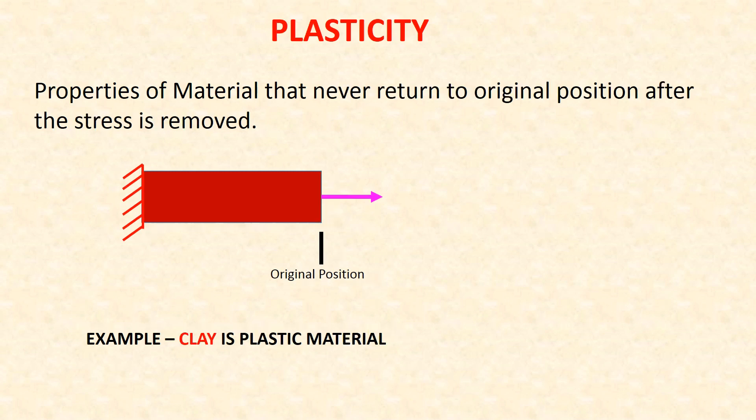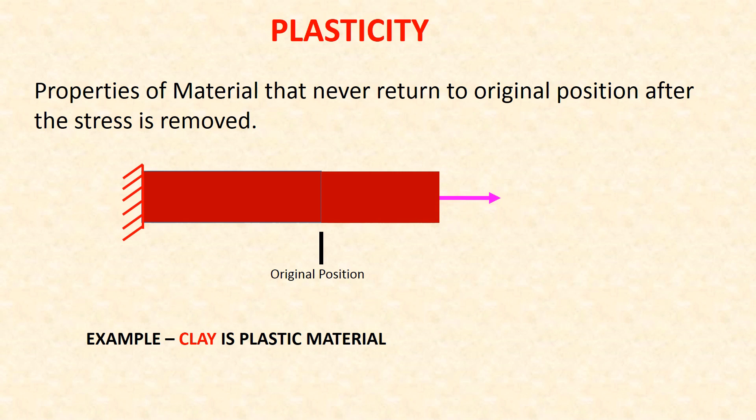Plasticity is the property of a material that never returns to its original position after the stress is removed. Stress is applied and the material elongates; after stress is removed, it never returns back to original position, or only partially recovers. Clay is an example of a plastic material.